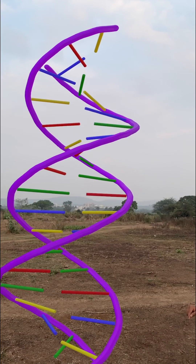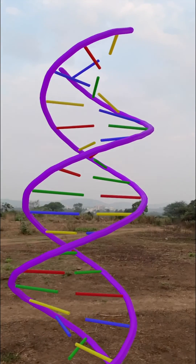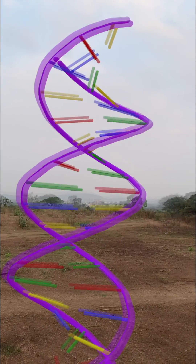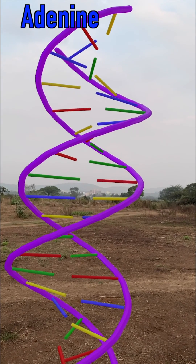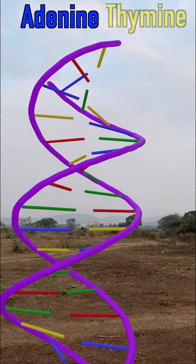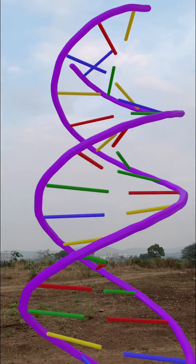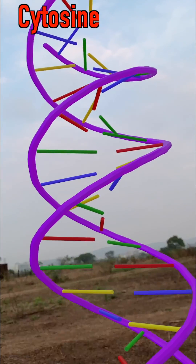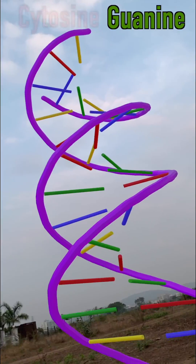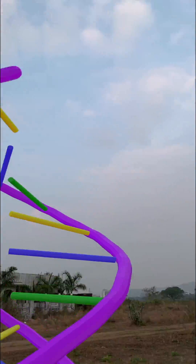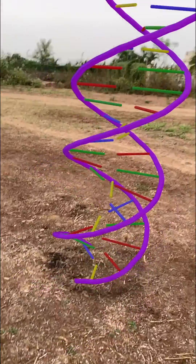You can see the backbone in purple color, and the nitrogenous bases inside: adenine is in blue color, thymine in yellow color, cytosine in red color, and guanine in green color. I can show you the molecule like this.